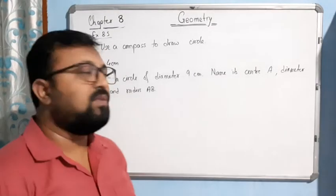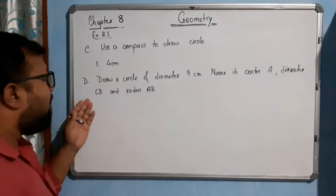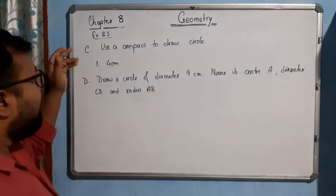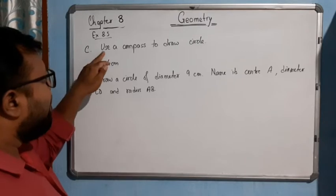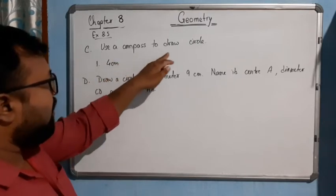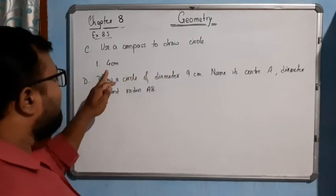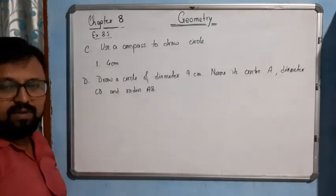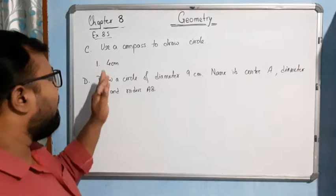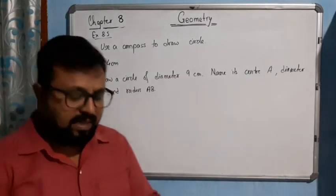Hello students, now come to the next part of this exercise, question number C and question number D. In question number C, use a compass to draw a circle having radius 4 centimeters. How can we draw a circle having 4 centimeter radius?